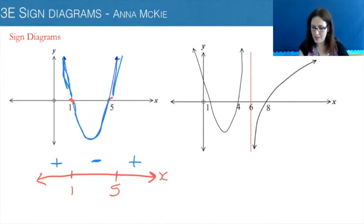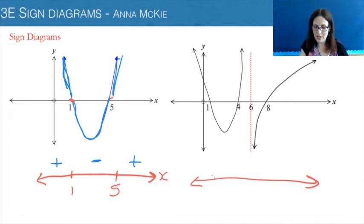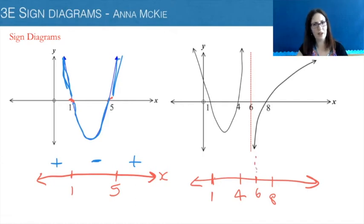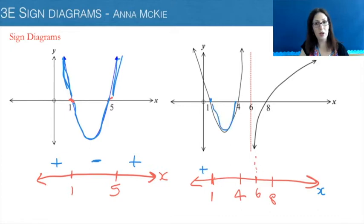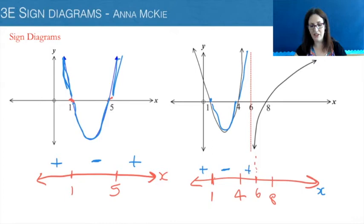The second example: again, we put on the x-intercepts and any vertical asymptotes. You can visually see we have an x-intercept at one, one at four, and one at eight. And at six, we have a vertical asymptote — the way we represent that is by a dashed line going just slightly above the sign diagram. You need to look at visually where the function is, which is the y-values in relation to the x-axis. Prior to one, we are above, so we have a plus. Between one and four it is below, so we put a minus. Between four and six it's above. Then we have our vertical asymptote, and it is below between six and eight. And then after eight, it is above. So there's our sign diagram for that.